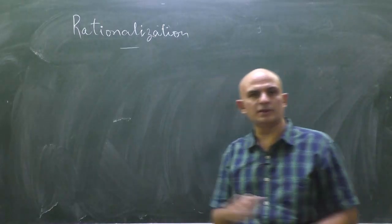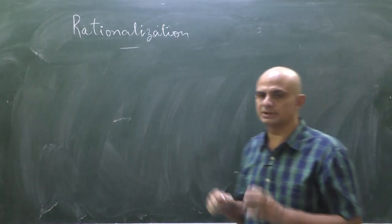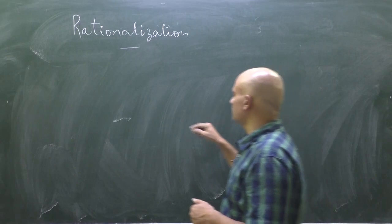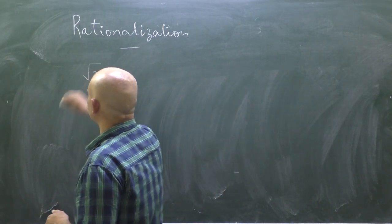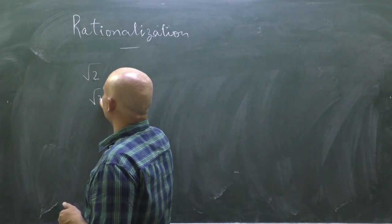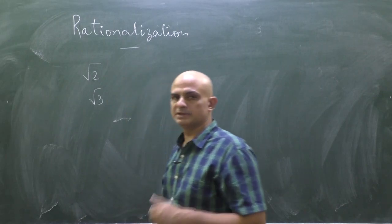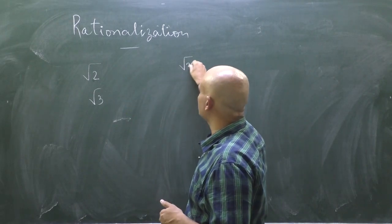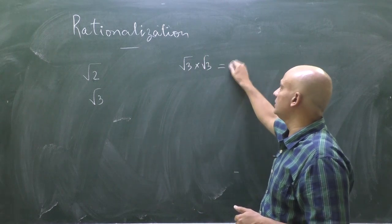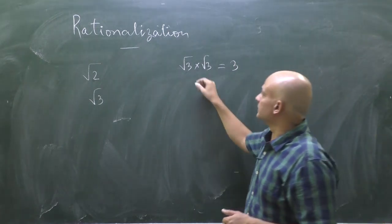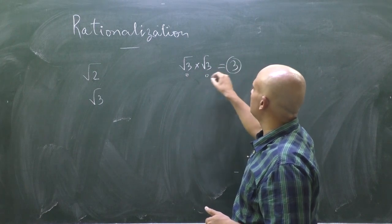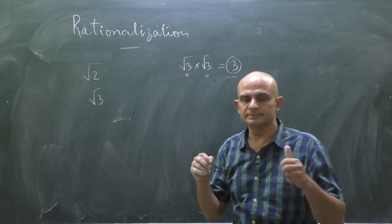Hello, my dear friends, myself Dr. Rakesh Kumar Tripathi, and we are going to discuss rationalization in this video. What is rationalization? Root 2 is an irrational number, root 3 is an irrational number, but root 3 into root 3 is 3 — its outcome is a rational number.